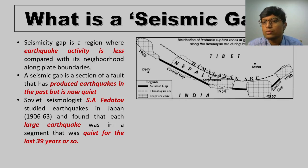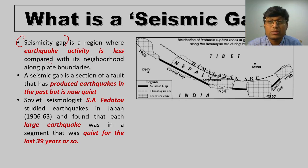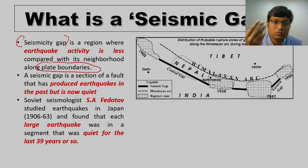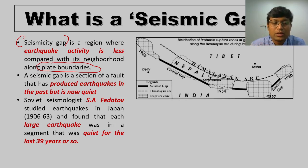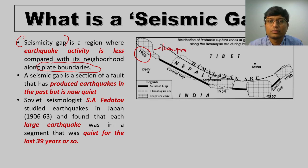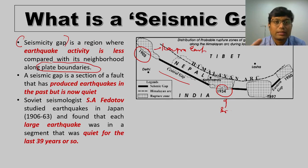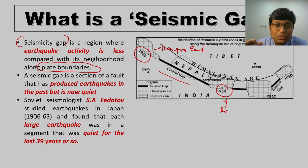A seismic gap, also called a seismicity gap, is a region where earthquake activity is less compared to its neighborhood along the plate boundary. Always remember, a seismic gap would exist only along the plate boundaries, because that is the only region which witnesses earthquakes — 90 percent of earthquakes are along plate boundaries. Another way to define it: a seismic gap is a section of a fault that has produced earthquakes in the past but is now quiet. The segment between the 1905 Kangra earthquake and the 1934 Bihar-Nepal earthquake is precisely such a seismic gap.